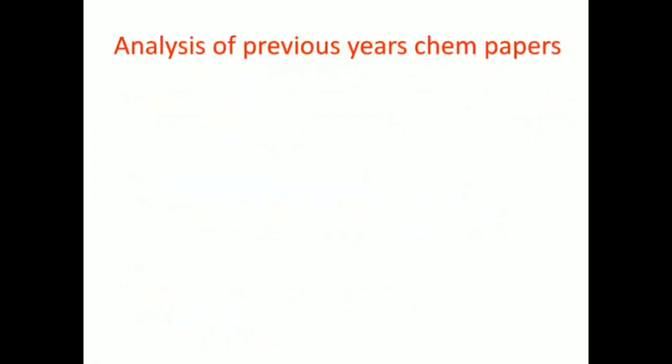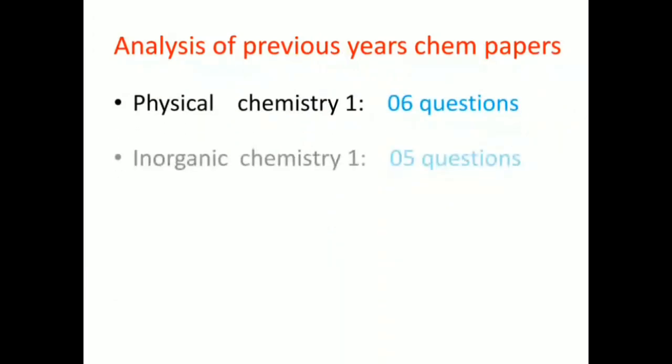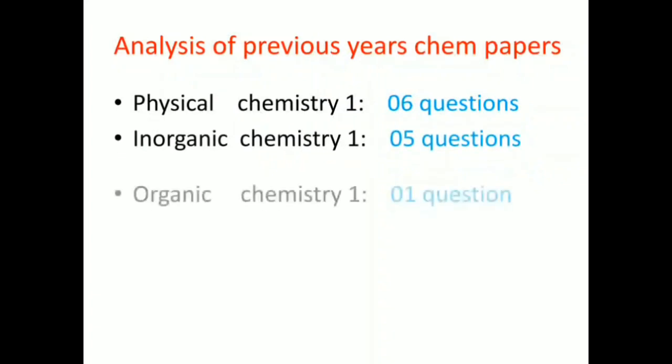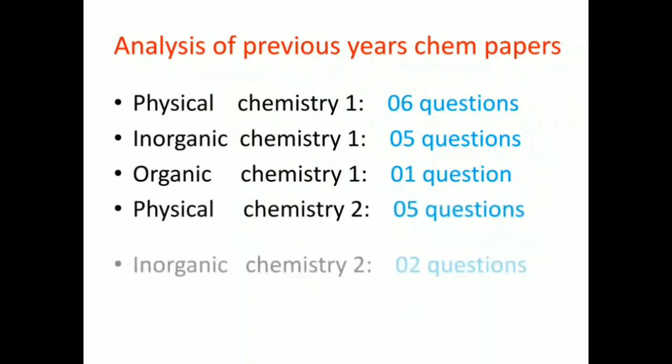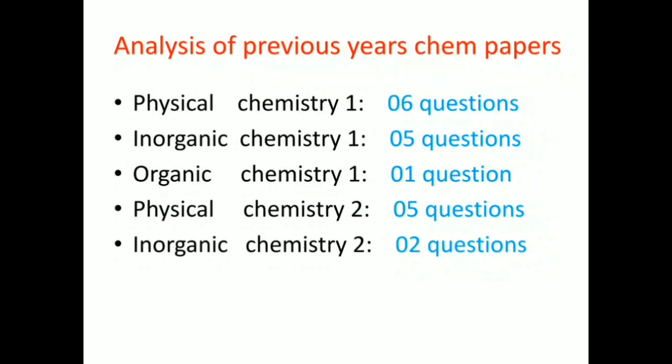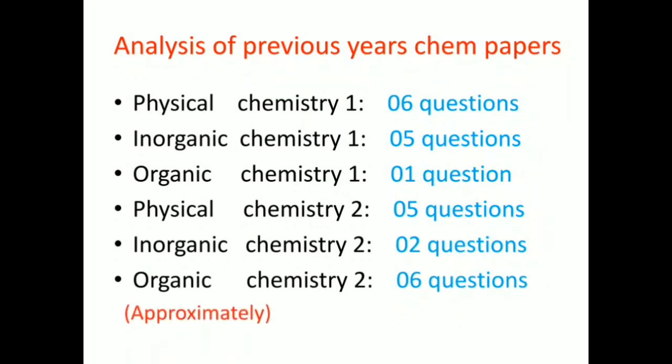Step one was analysis of previous year chemistry papers. Physical Chemistry 1 will have around six questions. Inorganic Chemistry 1 will have five questions. Organic Chemistry 1 will have one question. Physical Chemistry 2 will have five questions. Inorganic Chemistry 2 will have two questions. And Organic Chemistry 2 will have six questions. This is approximate - the number can change by one or two questions.